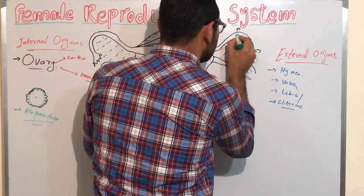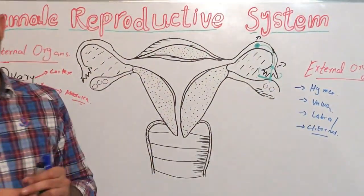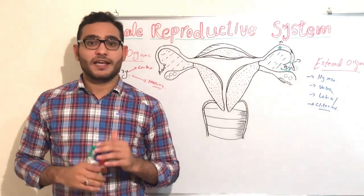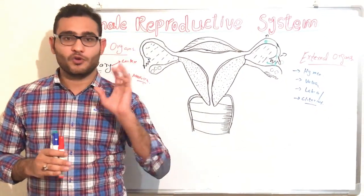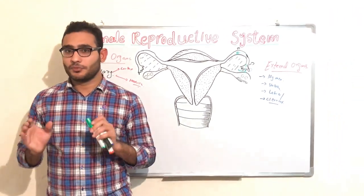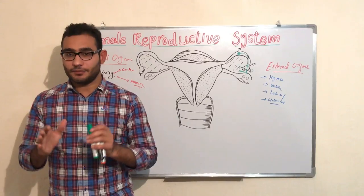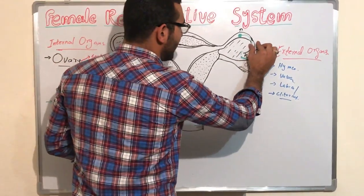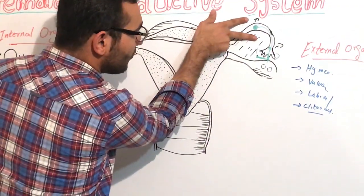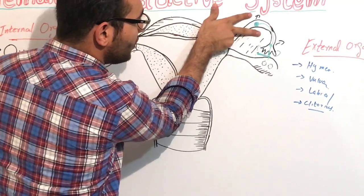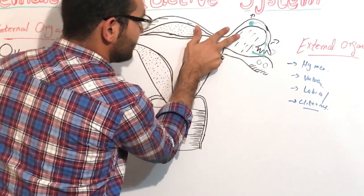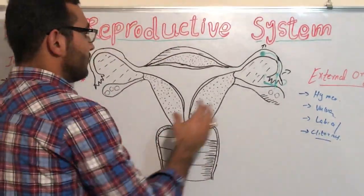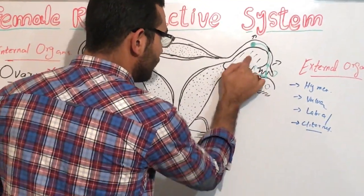The ampulla is the place where fertilization occurs. If someone asks why fertilization occurs in the ampulla, the reason is that in the fallopian tube, the ampulla is the widest and broadest part, so fertilization occurs in the ampullary region. When fertilization occurs, a zygote is formed.